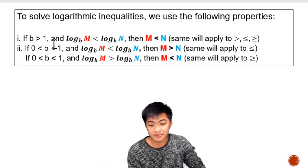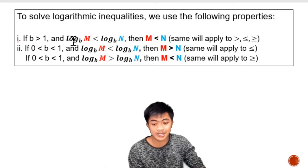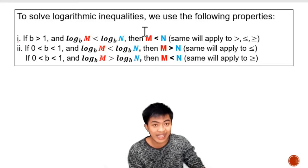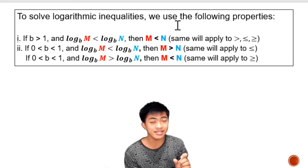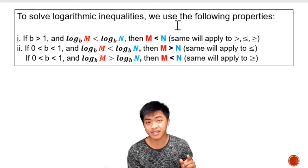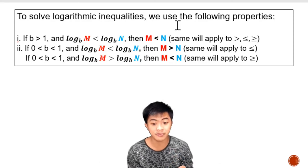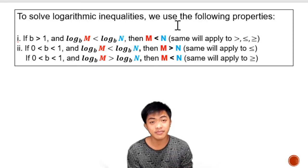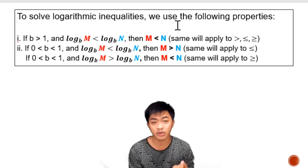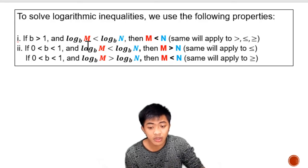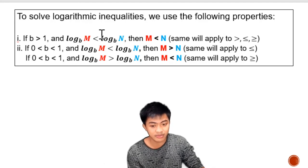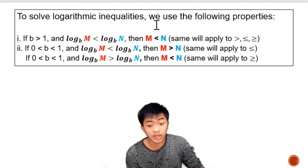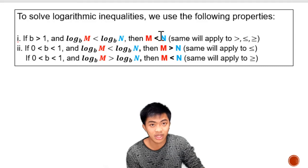Property 1: if the base is greater than 1, and the logarithm of m to the base b is less than the logarithm of n to the base b, then m is less than n. This property tells us that if the bases are greater than 1, we can just copy the arguments and preserve the inequality symbol.